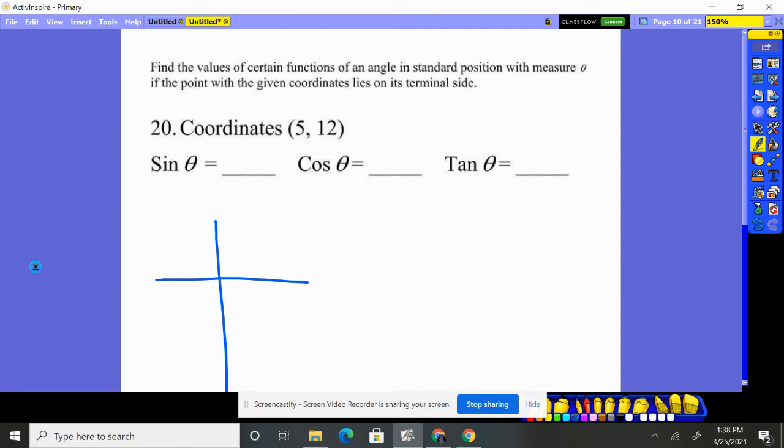It's saying we're going through the point 5, 12 right here. And this is its terminal side. Here's its initial side. So basically, all we're doing is we got a right triangle here. And we have theta right here that's between the initial side and the terminal side.